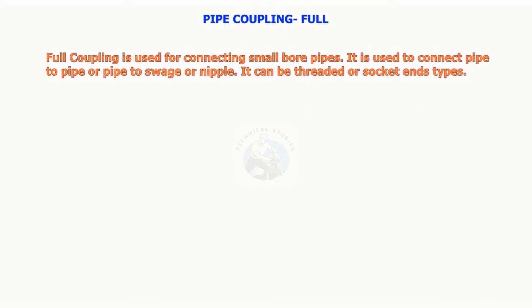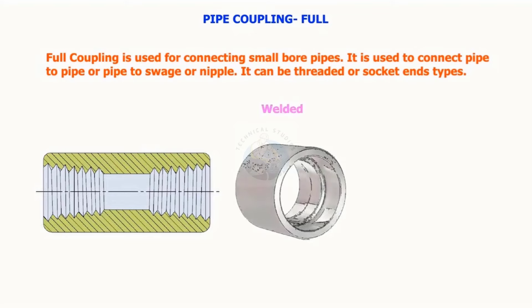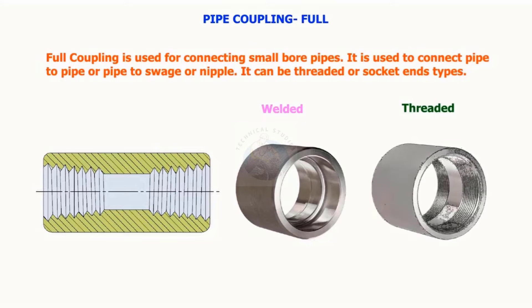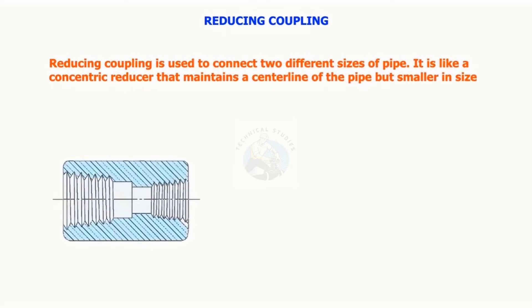Full coupling is used for connecting small bore pipes. It is used to connect pipe to pipe or pipe to swage or nipple. It can be threaded or socket end types. Reducing coupling is used to connect two different sizes of pipes. It is like a concentric reducer that maintains the center line of the pipe but is smaller in size.